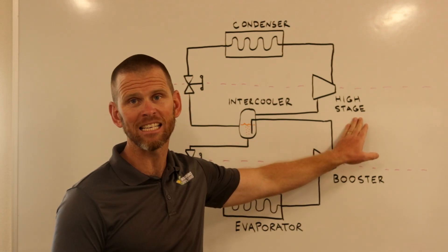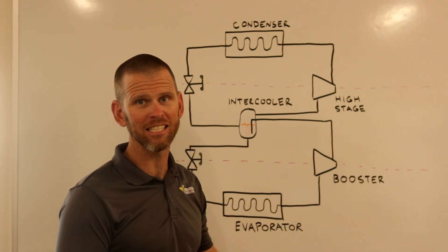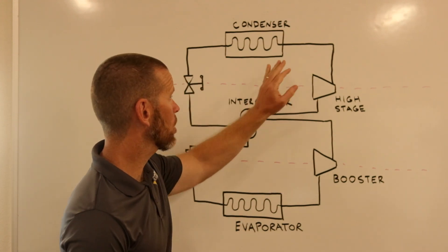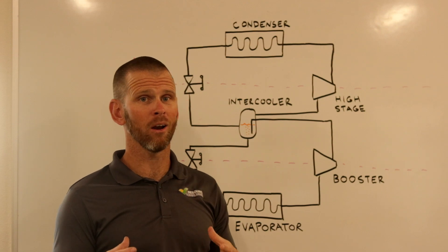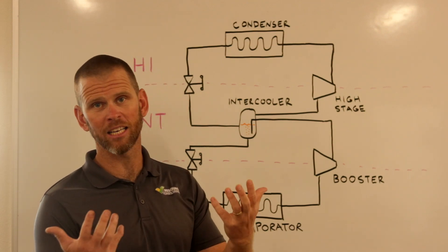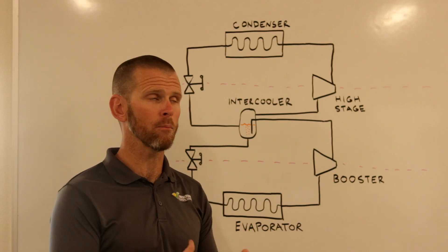First we have what we call our high-stage compressor. The high-stage compressor receives vapor, compresses it, and discharges to a condenser where the heat from the evaporators and the heat of compression gets rejected to atmosphere, just like in a standard vapor compression cycle.